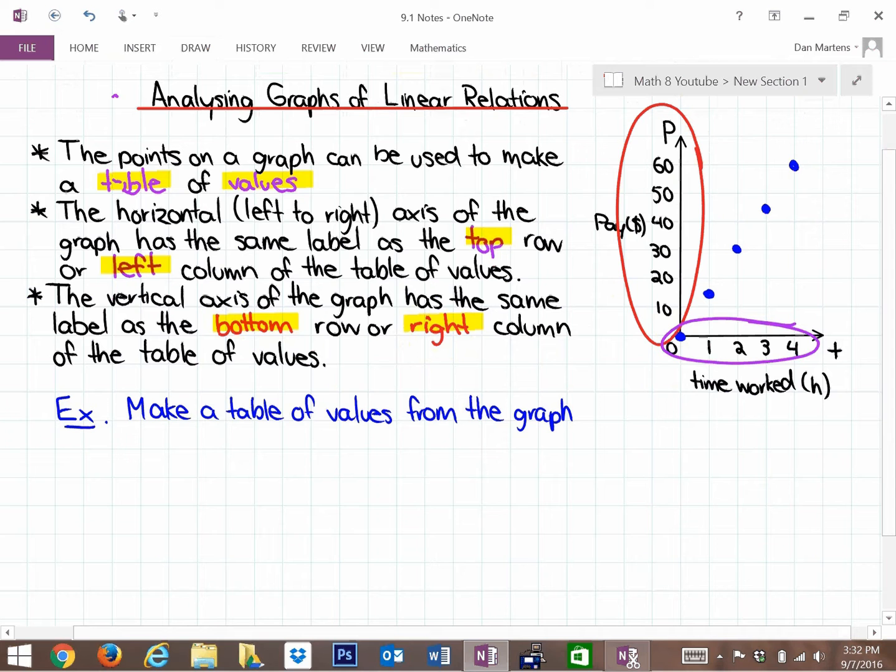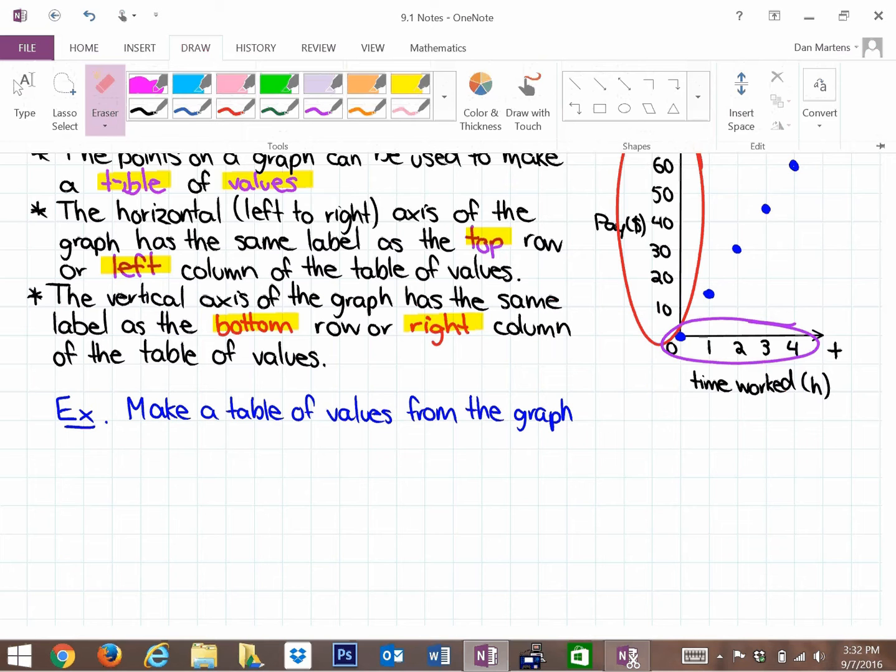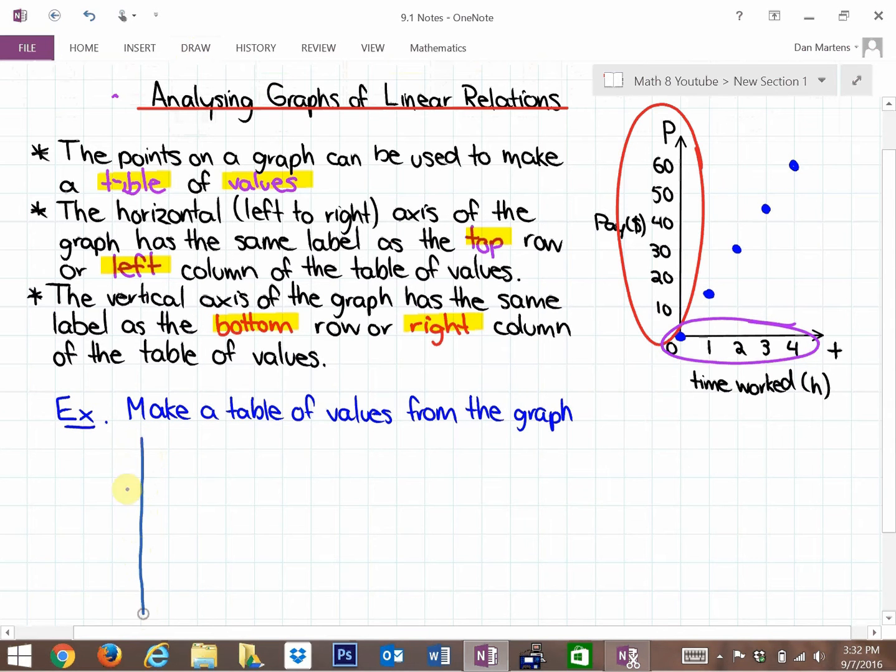As we're looking at this graph, let's look at the example here. Make a table of values from this graph. A table of values can look one of two ways, but the first thing that we know is that the horizontal axis comes first, so T will be our first variable. If we're going to make a vertical table of values, it looks like a T. If we're going to make a horizontal table of values, it looks like a sideways T. The first column, the left column, can be marked with a T, or the top row marked with a T, and the second column, or right column, or bottom row is marked with a P. The horizontal is always related to the left row or top column, and vice versa.